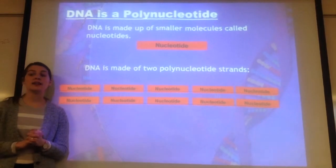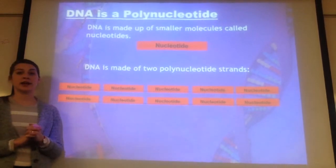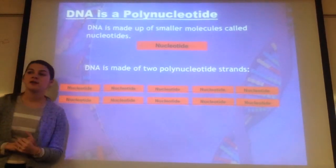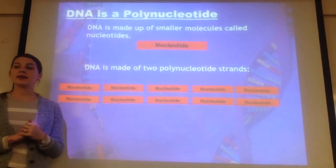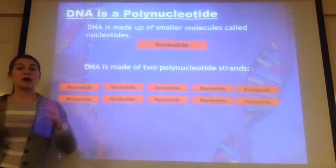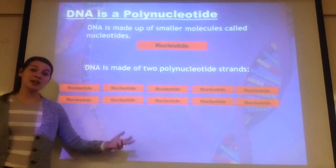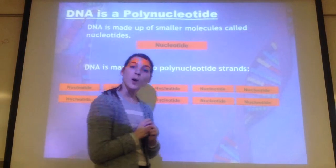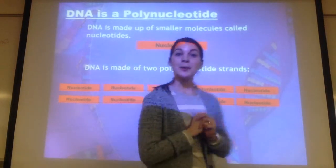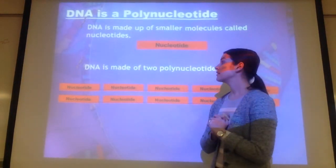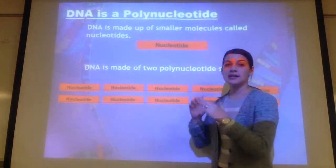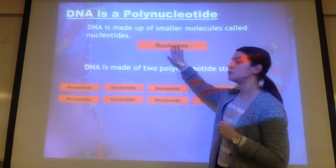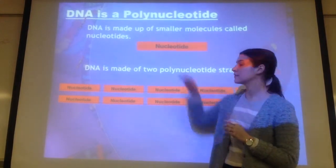DNA is a polynucleotide. Going back to biochemistry, DNA is a polymer — a long, long polymer made up of little monomers. This polymer, DNA, is made up of small pieces called nucleotides. When you hook all these nucleotides together, it makes a DNA molecule — a very big polymer.